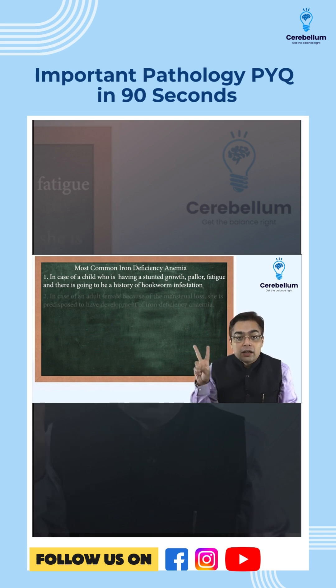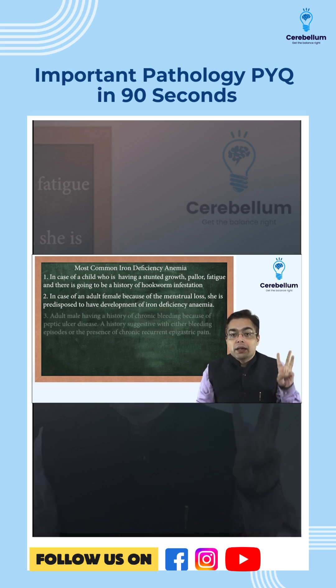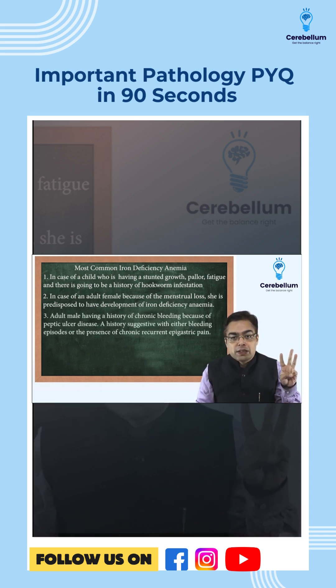In the case of an adult female, because of menstrual loss, she is predisposed to developing iron deficiency anemia. In the case of an adult male, a history of chronic bleeding due to peptic ulcer disease is a key pointer.